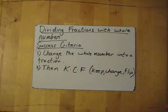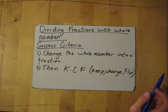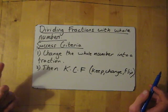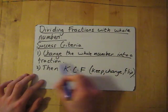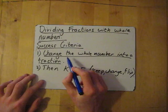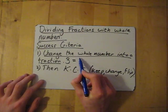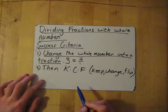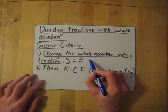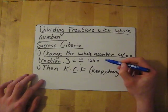Success criteria are very similar to that of multiplying fractions with whole numbers. So the first thing you need to do is change the whole number into a fraction. So like I showed you before, if I've got 3 and I want to change it into a fraction, I basically want to get 3 over 1. If I had 146 and I want to change it into a fraction, I'd have 146 over 1.